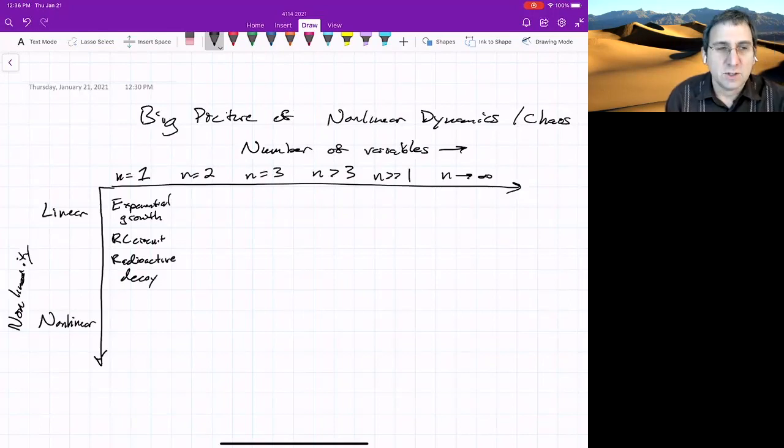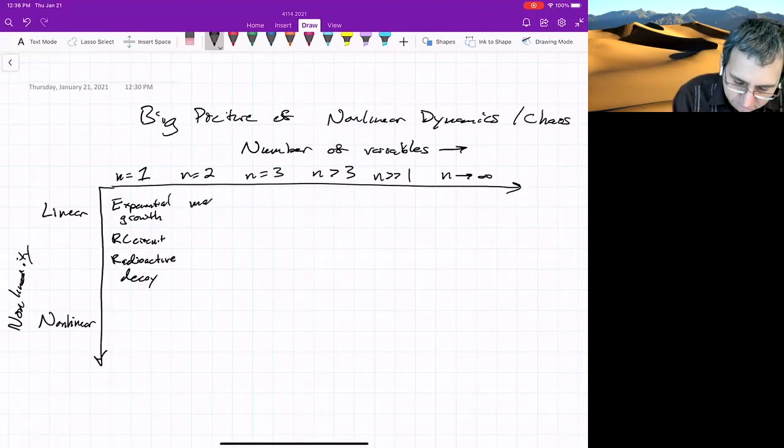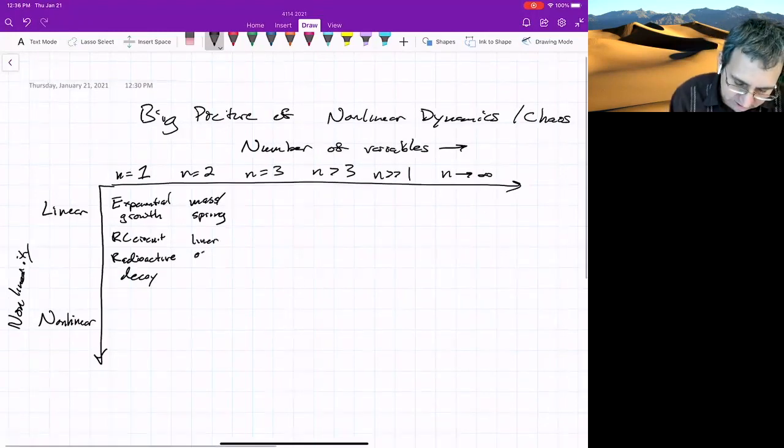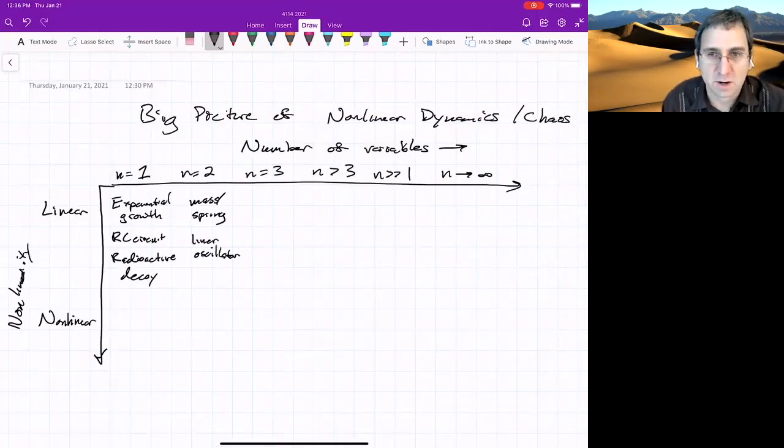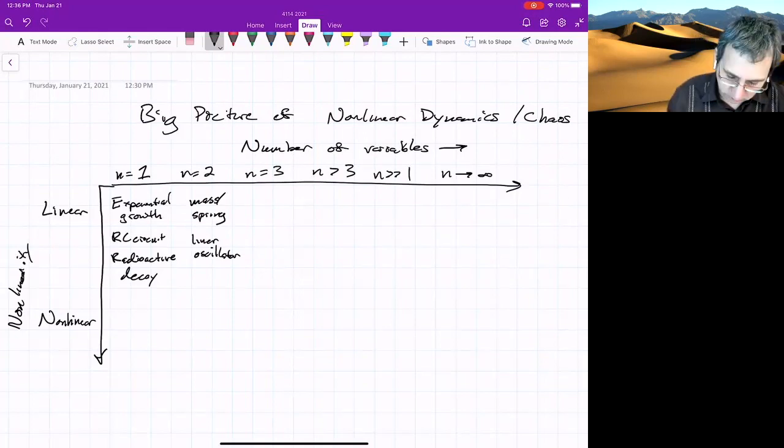What's linear in n equals 2? I guess this would be more like, if you've taken mechanics courses, a mass and spring system. So that becomes the linear oscillator. So there it is in the name, simple harmonic motion. N equals 3, we've got three variables. You could have a bunch of coupled exponential growth things.